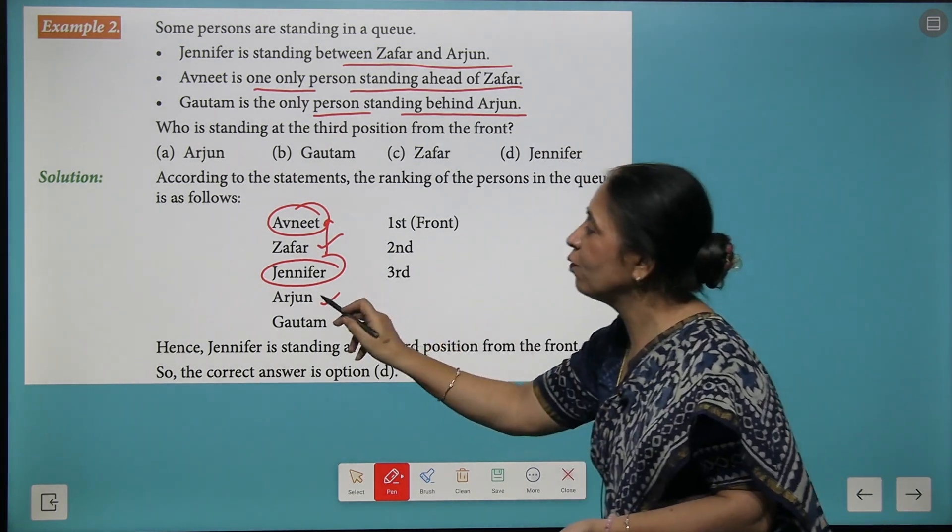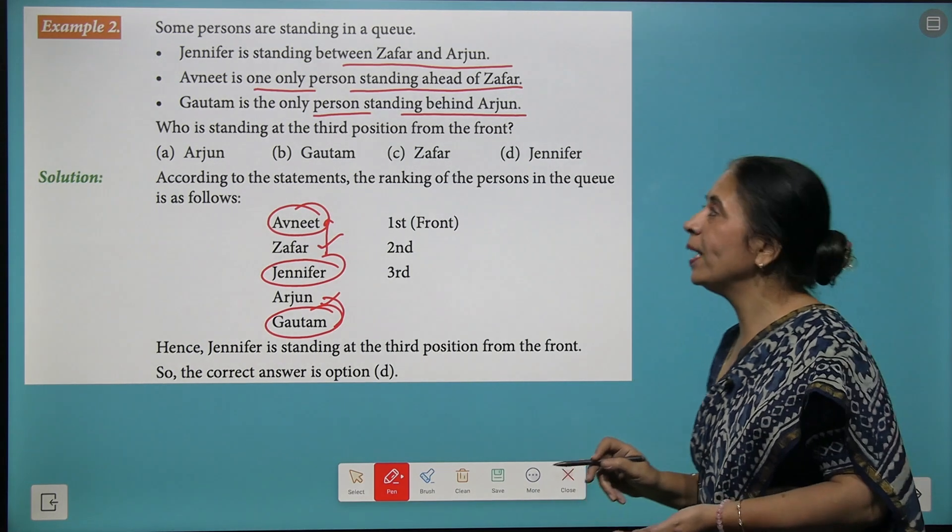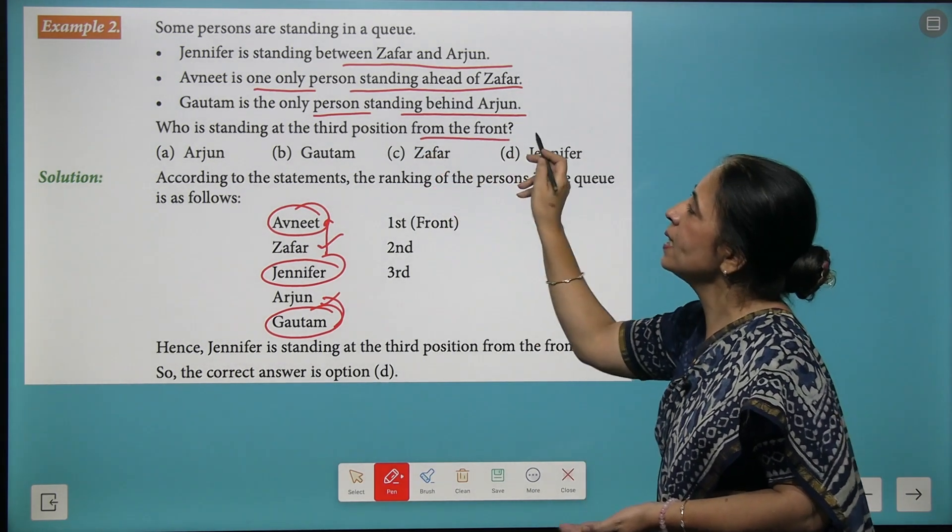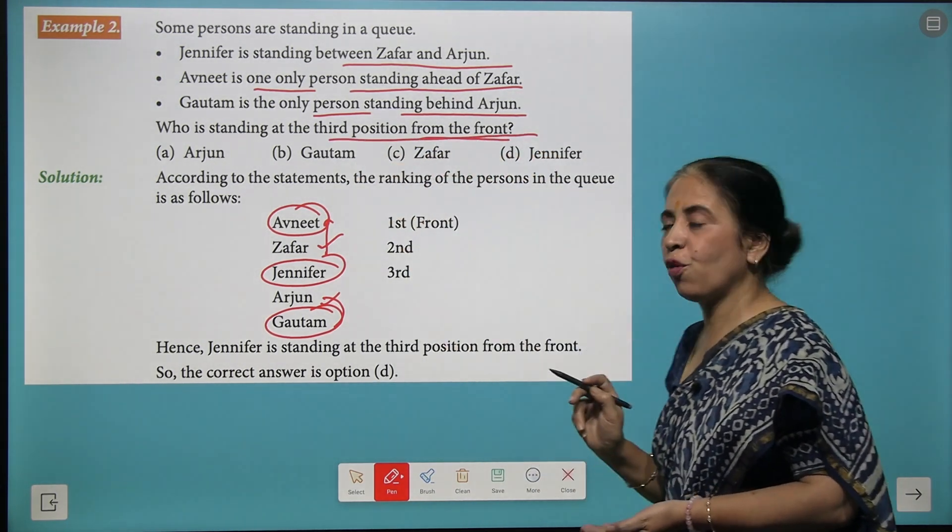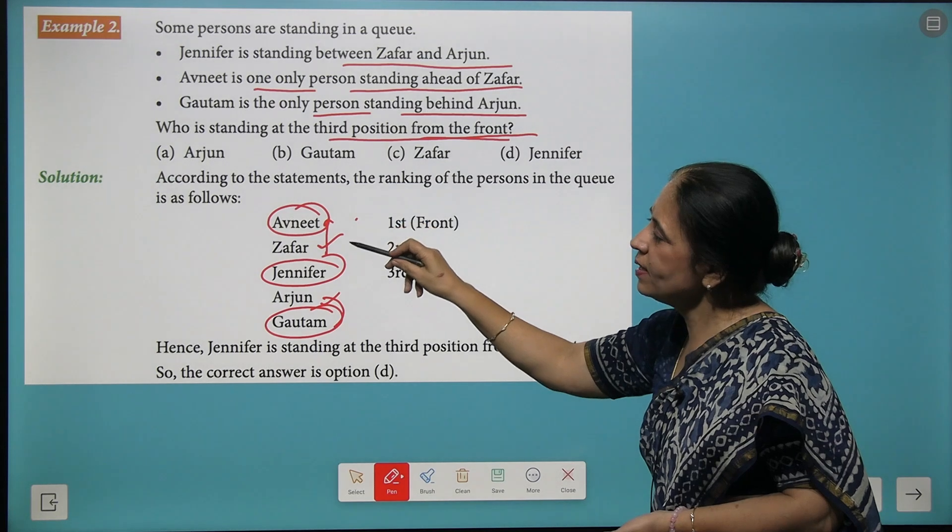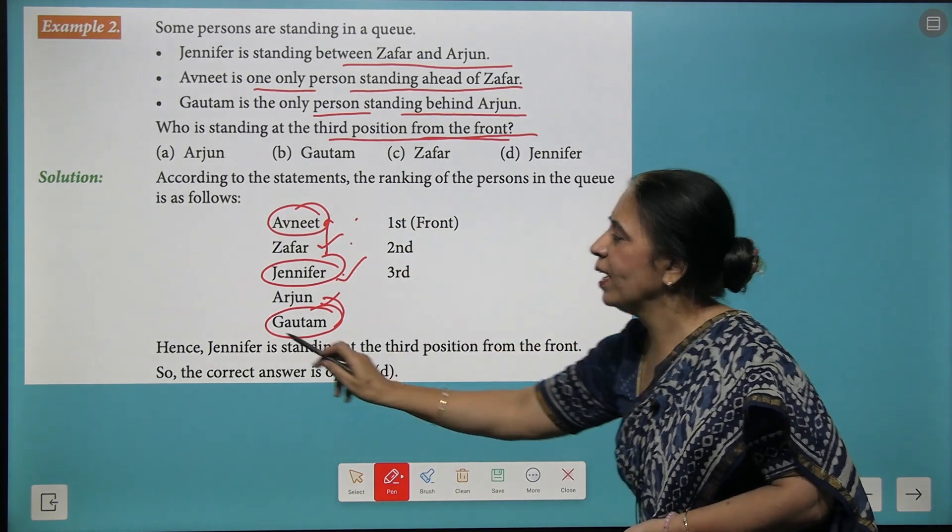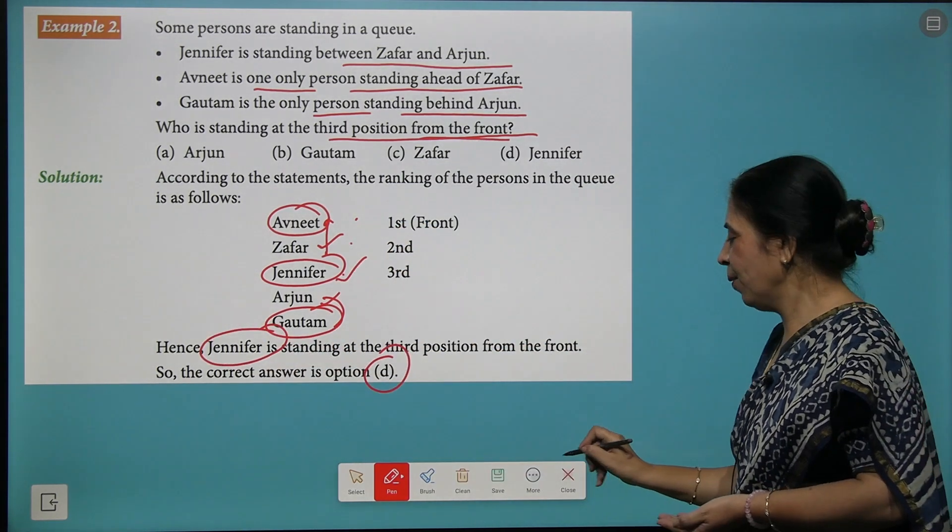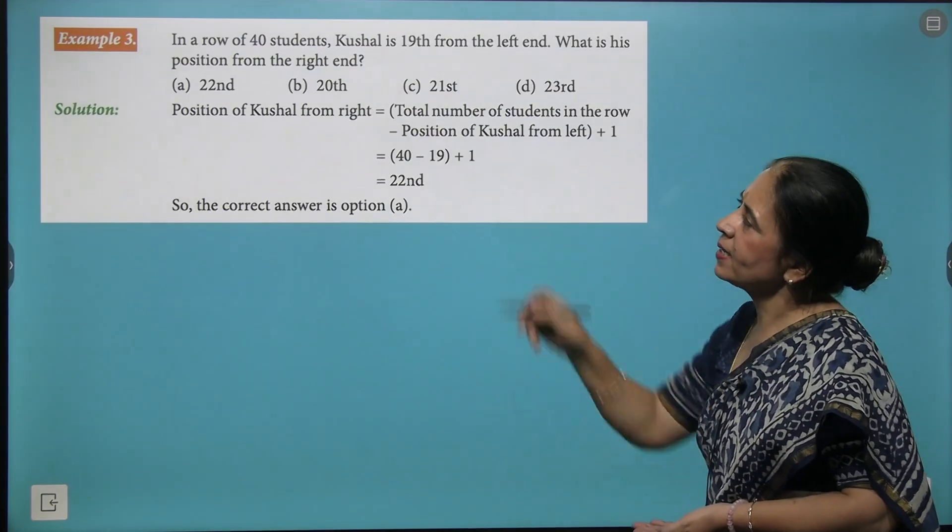Next point is Gautam is the only person standing behind Arjun, so after Arjun we write Gautam. Now the question is: who is at the third position from the front? Let's count: first, second, third, and we get Jennifer. So D is the right option.